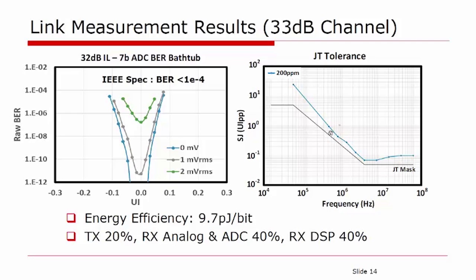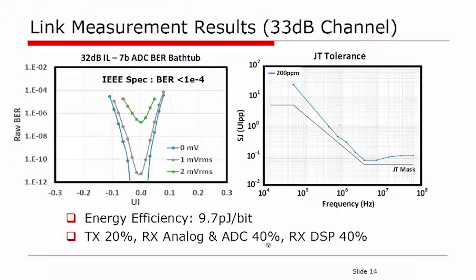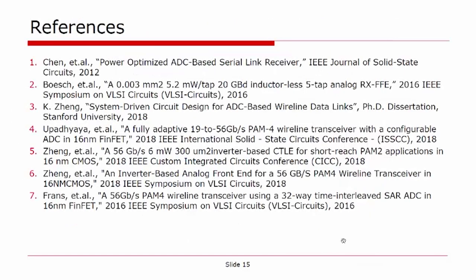Implemented in a 16 nanometer FinFET process, the transceiver consumes 9.7 picojoules per bit. 20% is consumed by the transmitter, 40% by the receiver front-end and ADC, and 40% by the DSP. For further details, please refer to the references shown on this page.